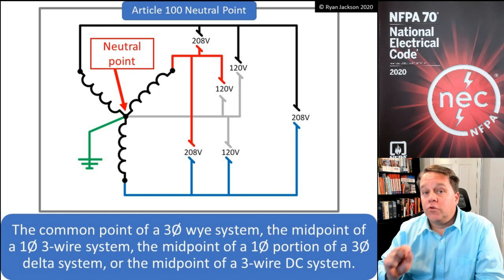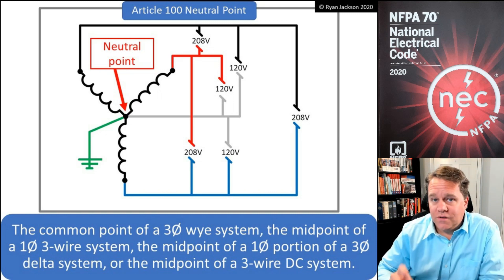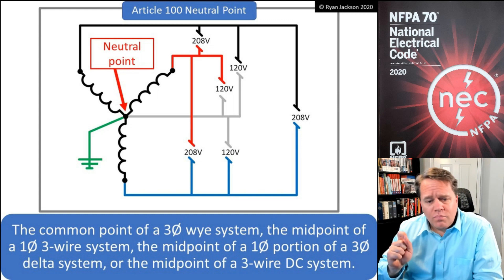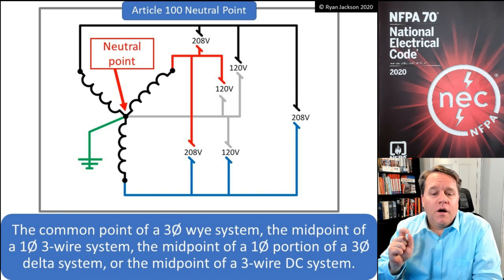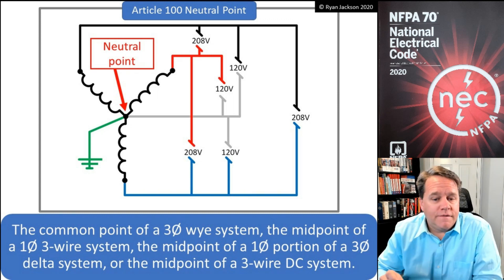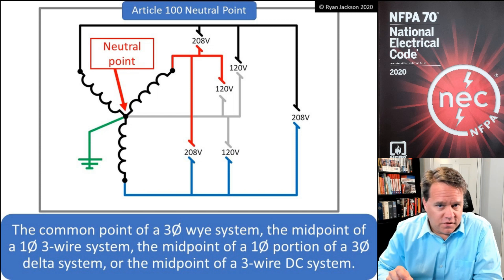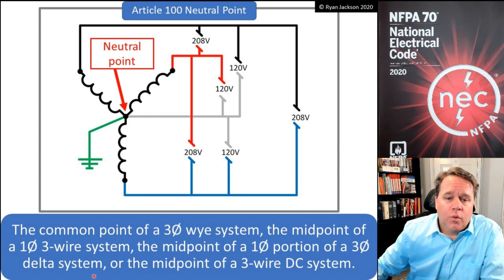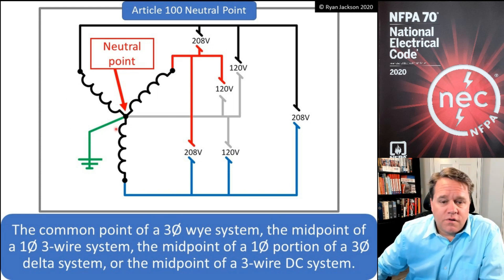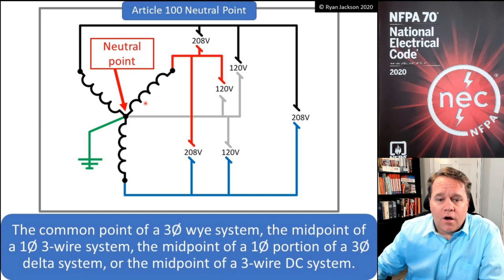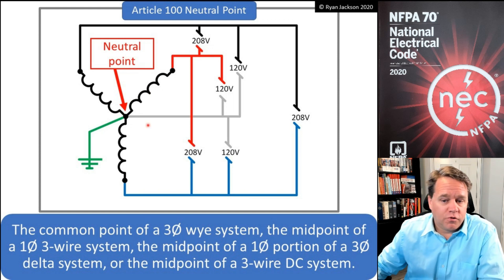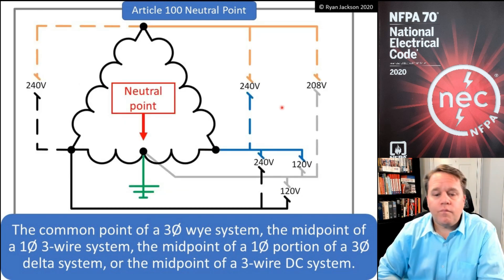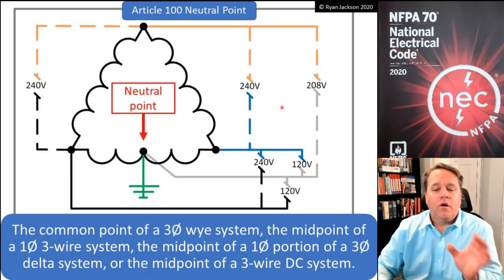The neutral point is defined in Article 100 as the common point of a three-phase Y connected system. So on a three-phase Y connected system, that common point is the neutral point. That's one example of a neutral point.